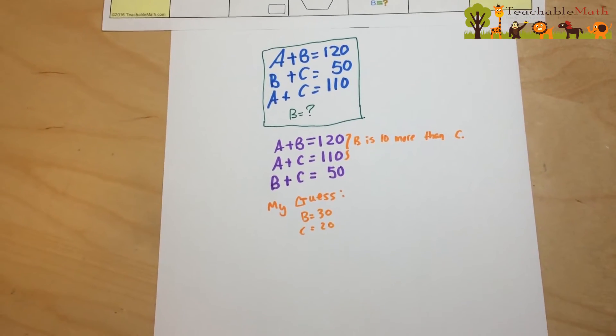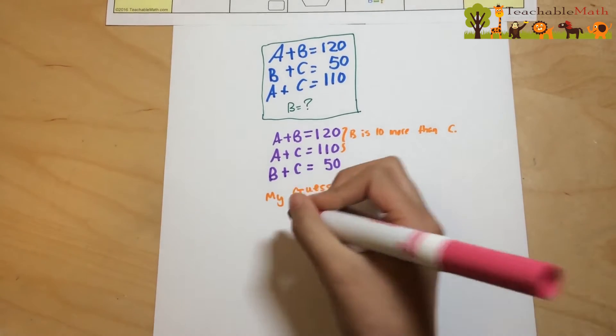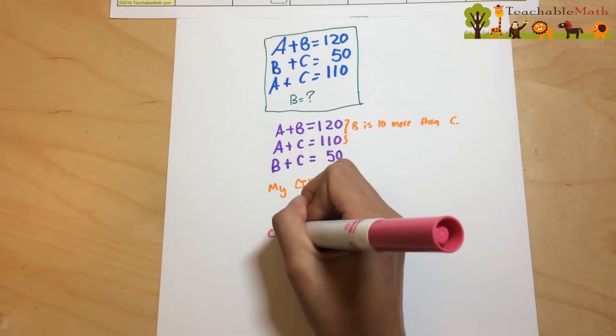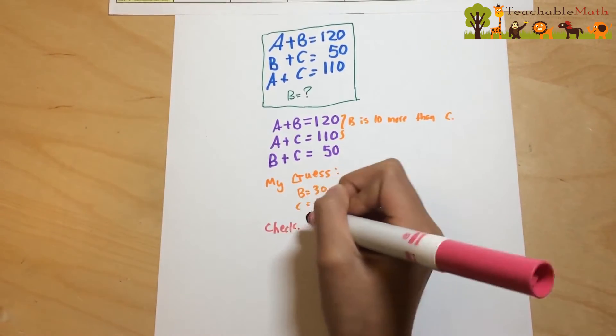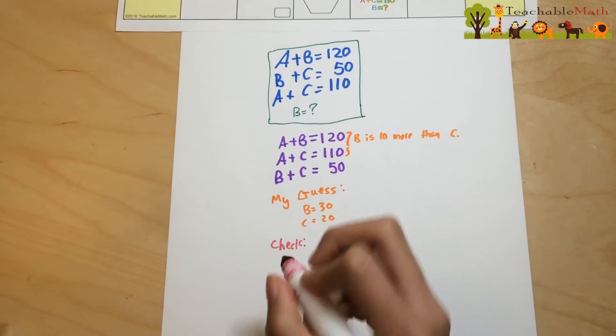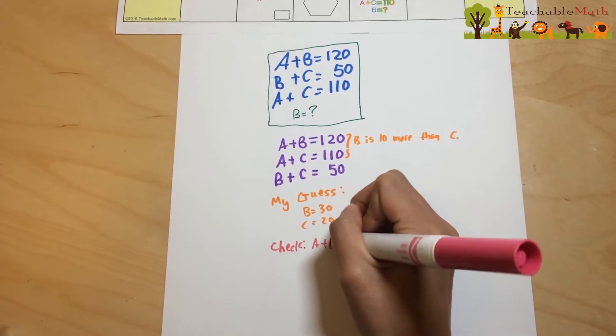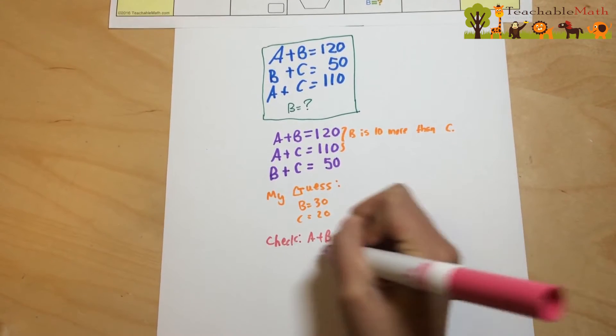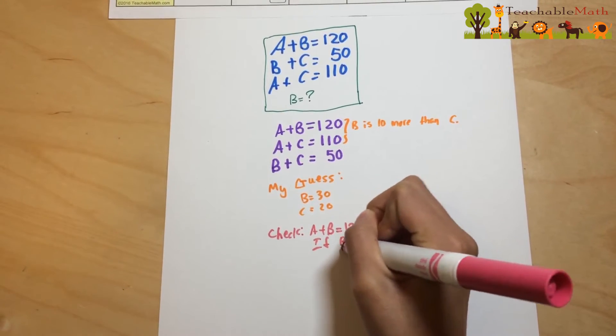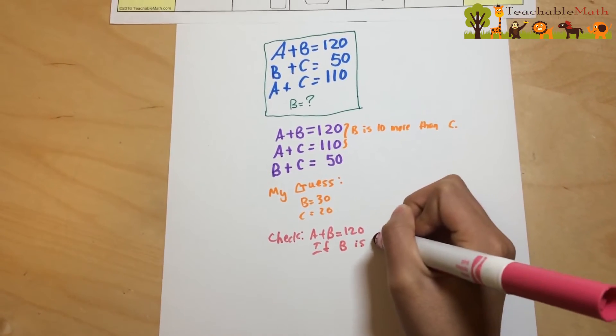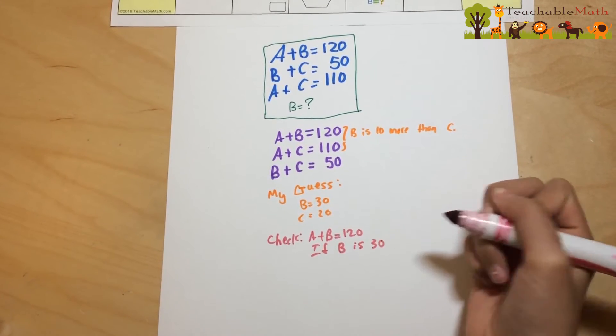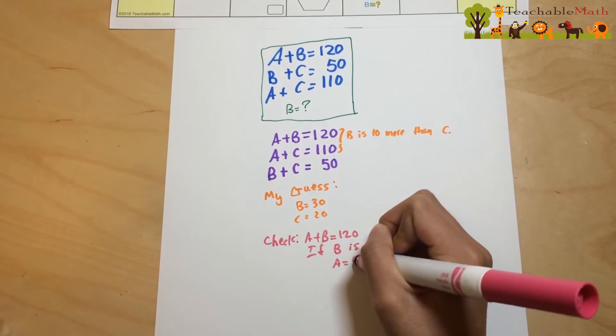So now we can check. A plus B equals 120. If B is 30, A equals 90.